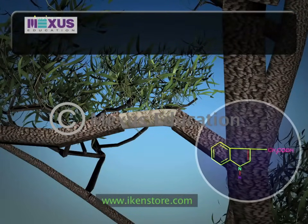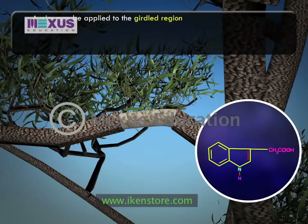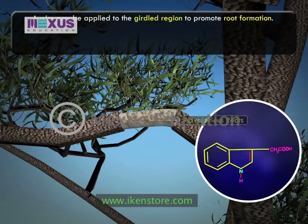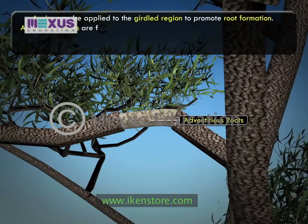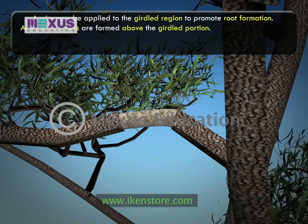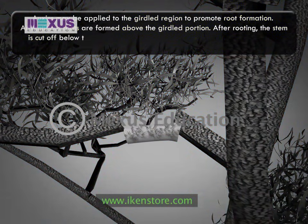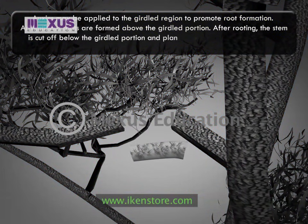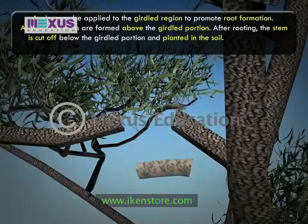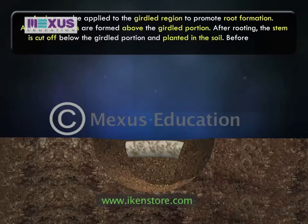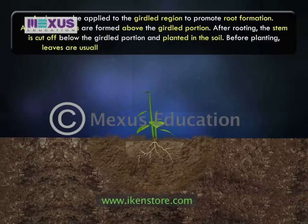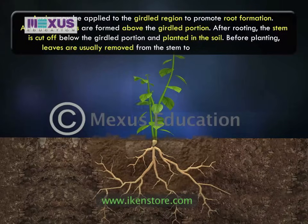Auxins may be applied to the girdle region to promote root formation. Adventitious roots are formed above the girdle portion. After rooting, the stem is cut off below the girdle portion and planted in the soil. Before planting, leaves are usually removed from the stem to prevent transpiration.